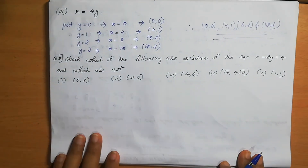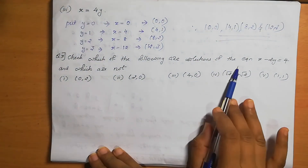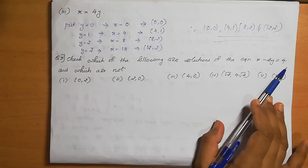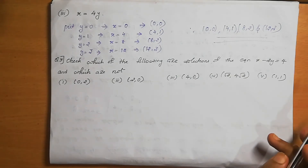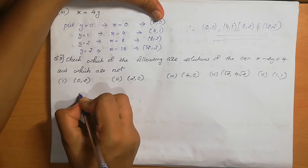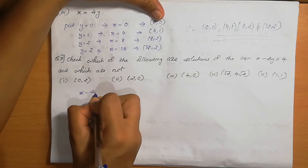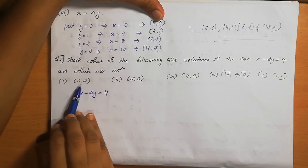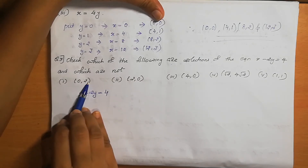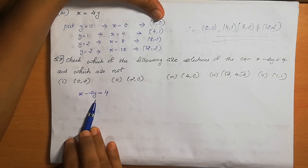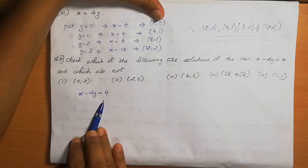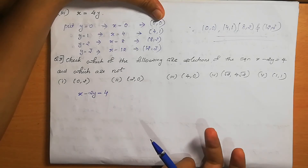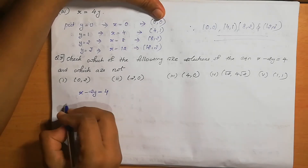Question number 3: Check which of the following are solutions of the equation x − 2y = 4 and which are not. We substitute the given x and y values into the LHS; if LHS equals RHS (which is 4), it is a solution; otherwise it is not. First, check (0, 2): x=0, y=2.